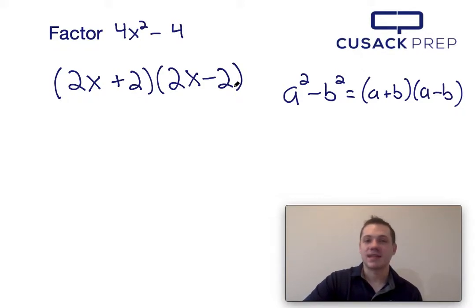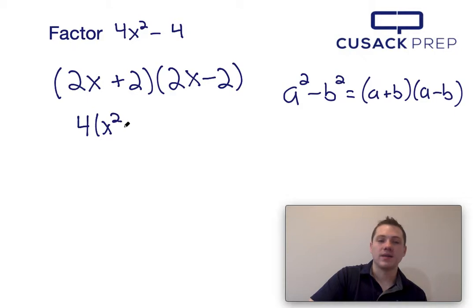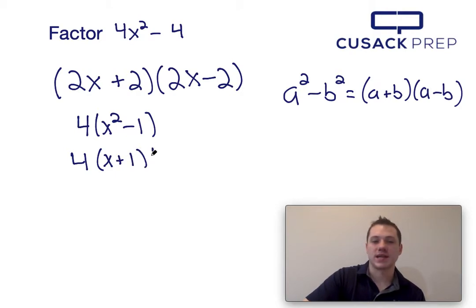You also could factor it by taking a 4 out at the beginning, so let's do that. So we would have 4 times x squared minus 1, and then x squared minus 1 can be factored using the difference of squares, and we would have 4 times x plus 1 times x minus 1.